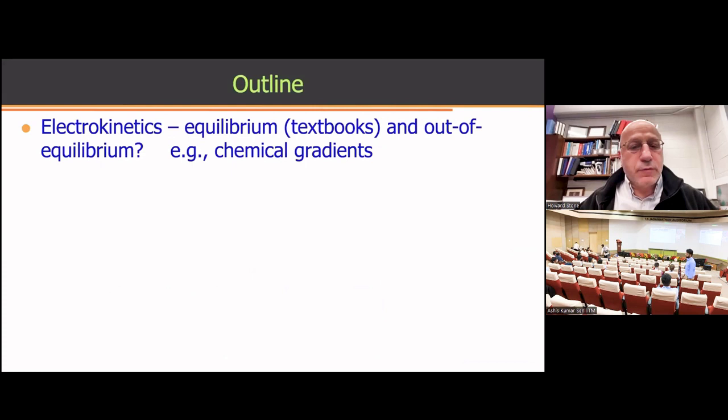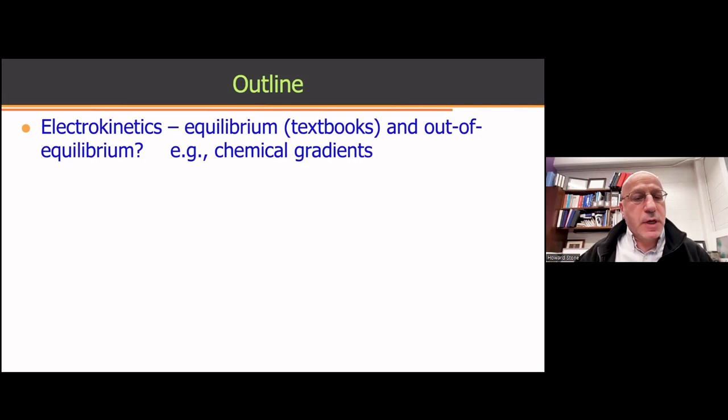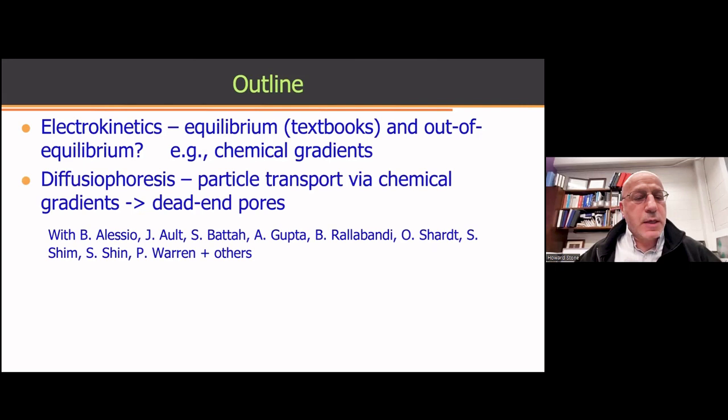So I have 15 or 20 minutes. I thought I'd just give you a survey of a few things involving physical chemistry and fluid mechanics. The topic relates to how chemical gradients affect materials. You might have been introduced to that when you think about equilibrium systems. I will tell you about non-equilibrium systems, and that term is referred to as diffusio-phoresis.